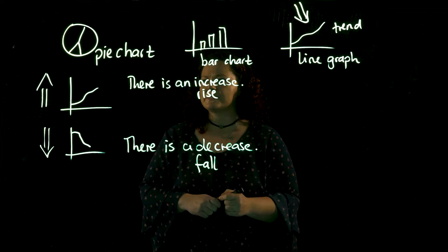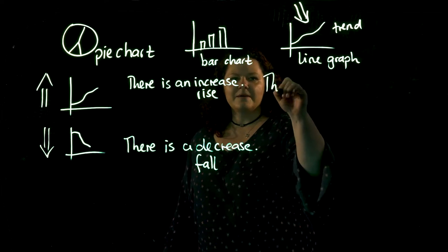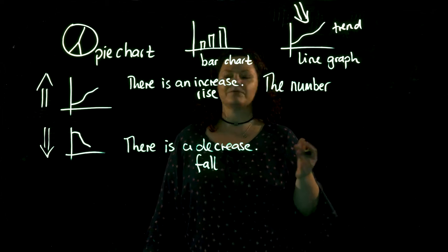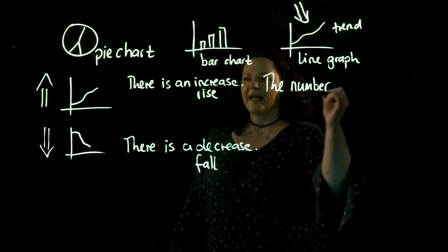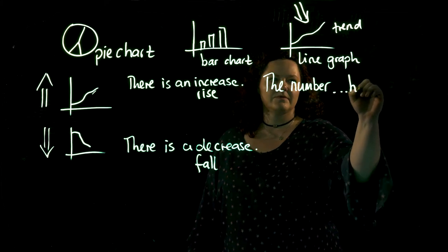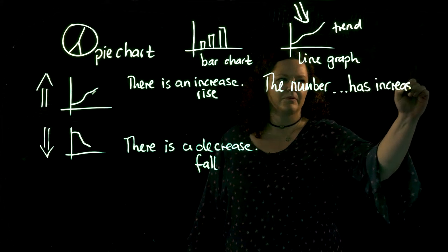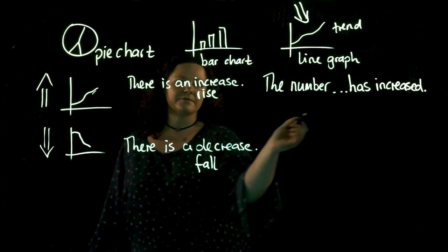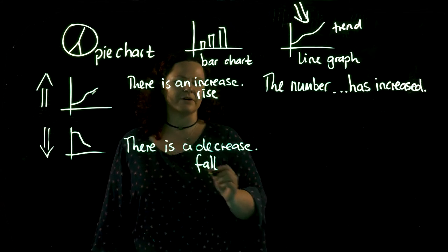Now we can also say, for example, the number of people who have a driving license has increased. The number has increased. So in this case, this is a verb here, we have a noun.